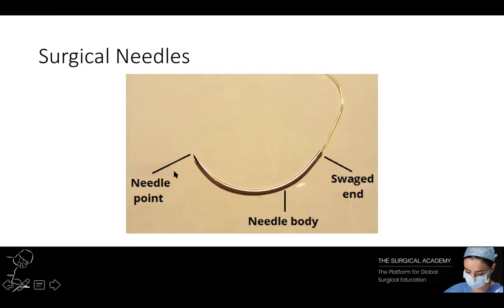The needle point acts to pierce the tissue, beginning at the maximal point of the body and running to the end of the needle. It can be either sharp or blunt. Blunt needles are used for abdominal wall closure and in friable tissues, and can potentially reduce the risk of blood-borne virus transmission from needle-stick injuries.